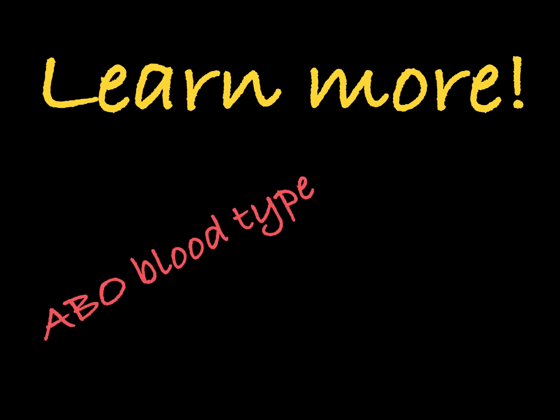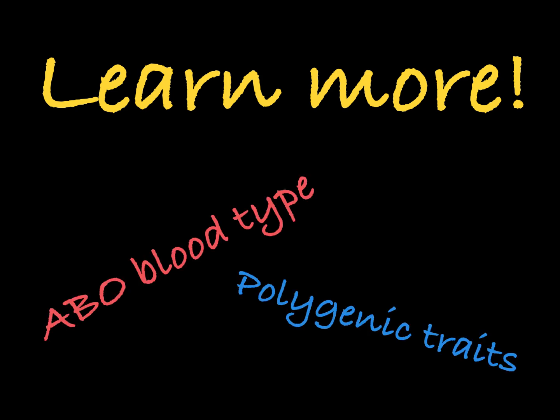There you have it. The gene TYR in rabbits is a great example of a gene with multiple alleles. If you'd like to see another example of a gene with multiple alleles, see my video on ABO blood type. If you'd like to learn more about the concept of polygenic traits, see my video on that topic.